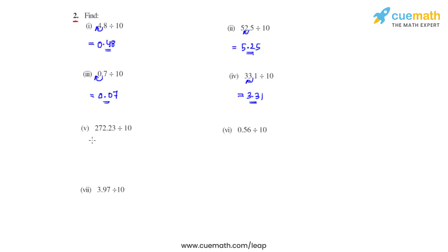Coming to the fifth bit, we have 272.23 divided by 10. So the decimal moves one place towards the right and will now be between the digits 7 and 2. The answer will be 27.223 for the fifth bit.